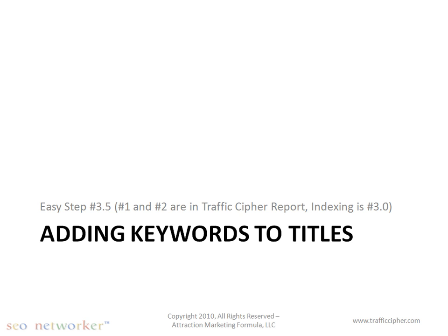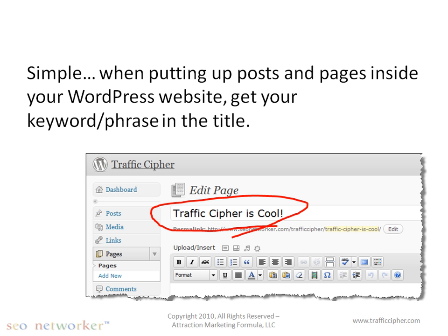Now let's talk about adding keywords to your titles. Since the Traffic Cipher report covers two essential steps, this is step number 3.5 — getting indexed was kind of step 3.0. So step 3.5 is adding keywords to your titles. It's really simple. Within your WordPress website, when you put up any posts or pages, all you have to do is put your keyword or phrase in your title. It doesn't have to be the complete title — it can be part of it. For example, if I'm putting up a page and trying to rank for Traffic Cipher, I just say 'Traffic Cipher' — that's the keyword, and that's it.